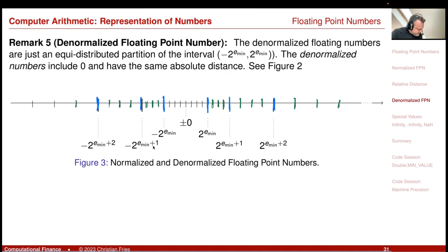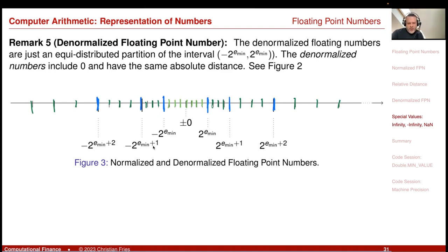The denormalized numbers fill the gap around zero with C=0,1,2,3 on both sides, giving a nice discretization of the entire number axis.